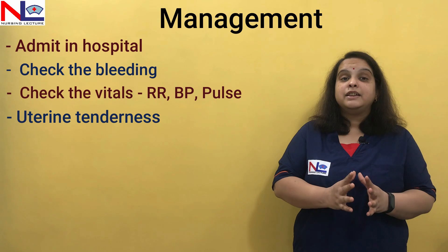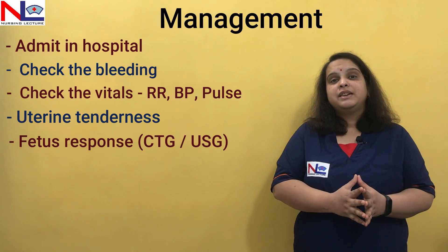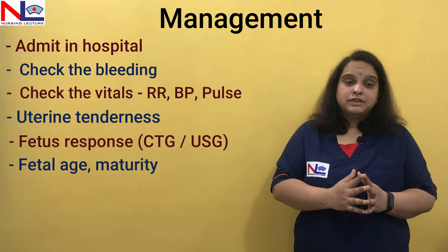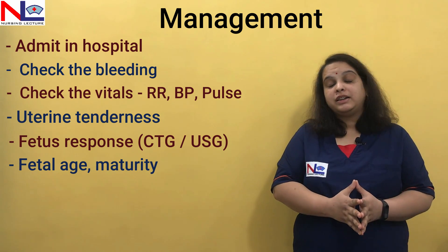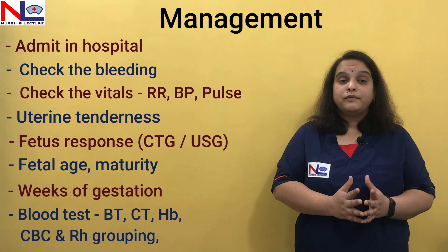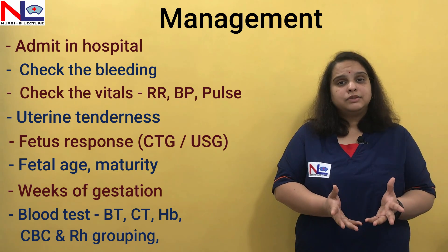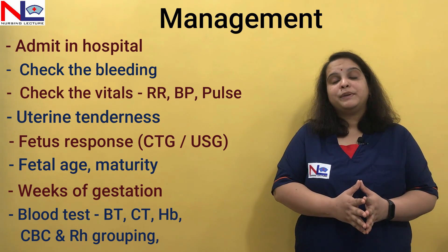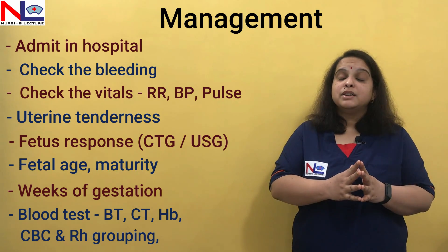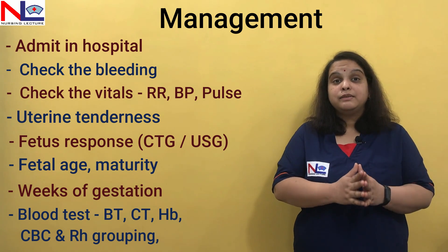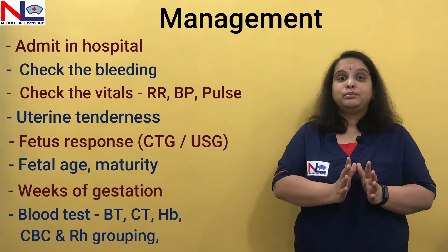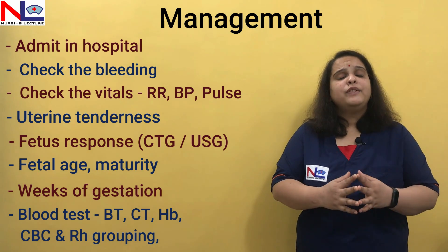We assess whether the woman is hemodynamically stable, perform abdominal palpation to check fetal status, and do a CTG to assess fetal heart rate and fetal condition. We note the gestational age and maturity, and send blood for hemoglobin, CBC, BT/CT, and group and cross-matching including Rh grouping, so blood is ready if transfusion is needed. These are the preparations needed when the woman presents with this condition — and we will not insert any finger in the vagina to locate the placenta.